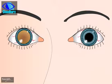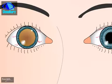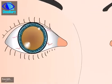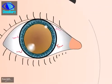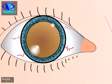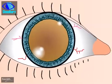Understanding Cataract Surgery. The natural lens in the eye becomes opaque and is called a cataract.